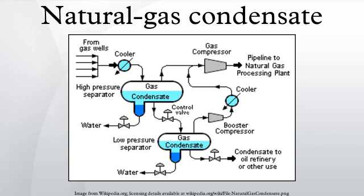Dry gas wells typically produce only raw natural gas that does not contain any hydrocarbon liquids. Such gas is called non-associated gas. Condensate from dry gas is extracted at gas processing plants and, hence, is often referred to as plant condensate.